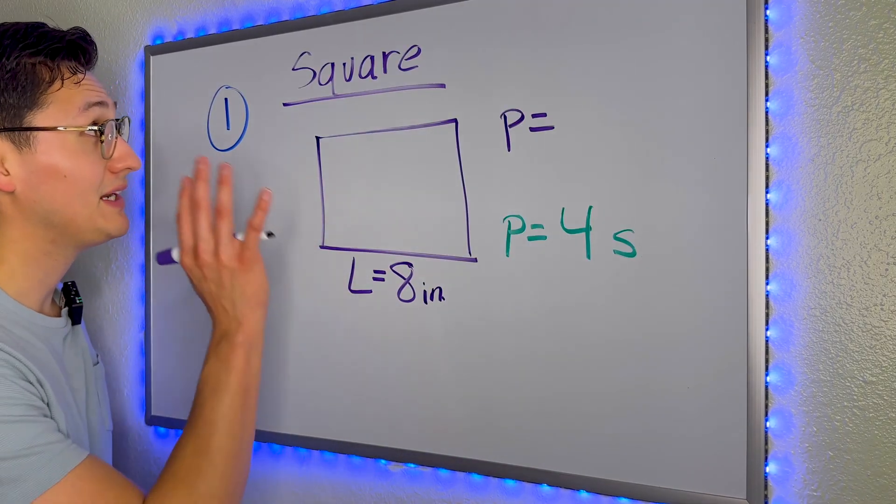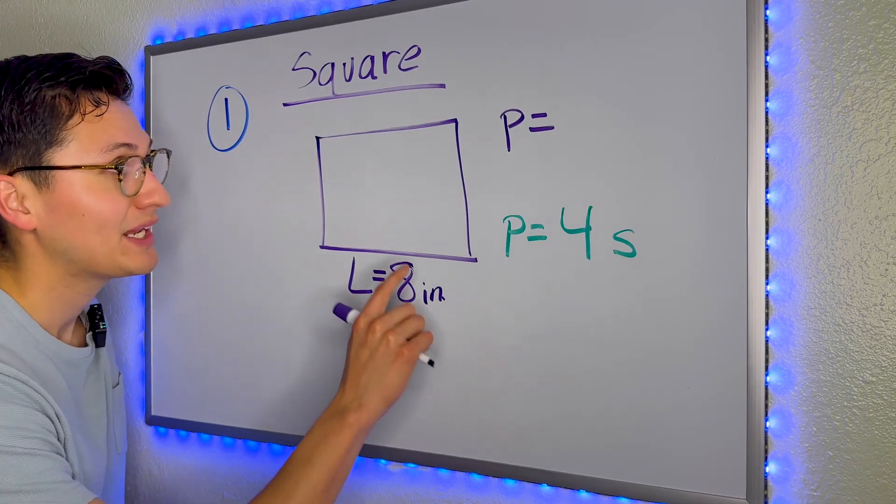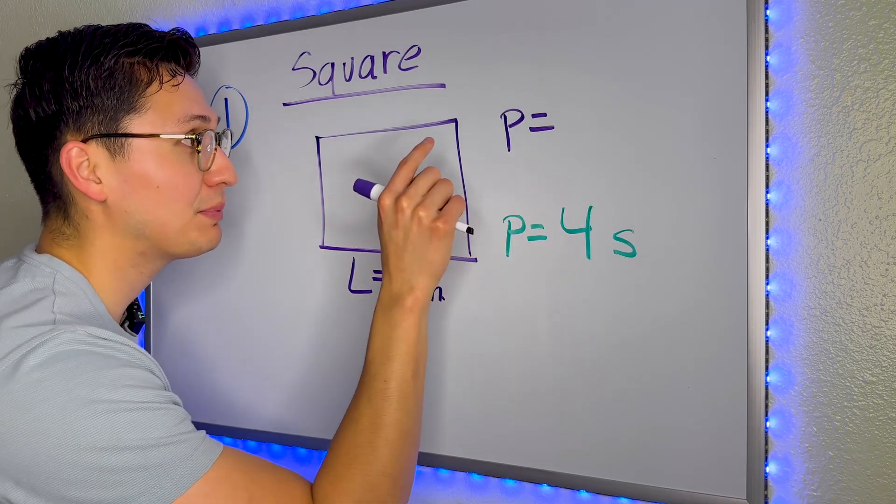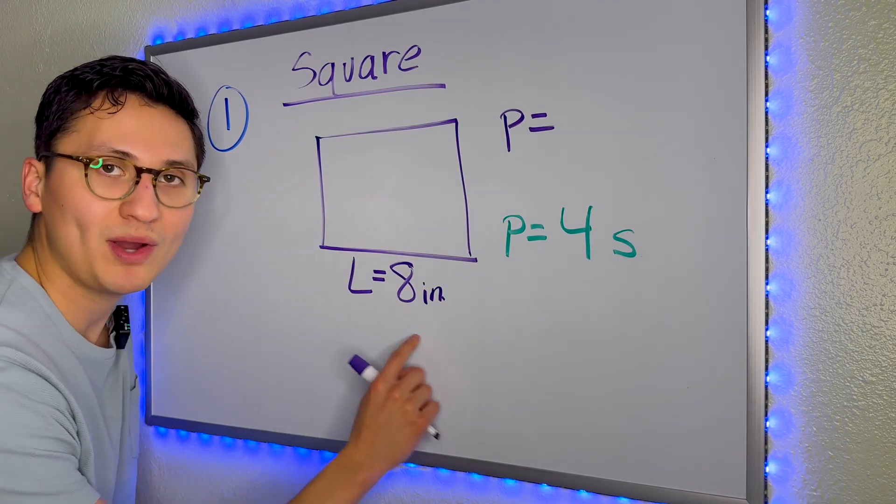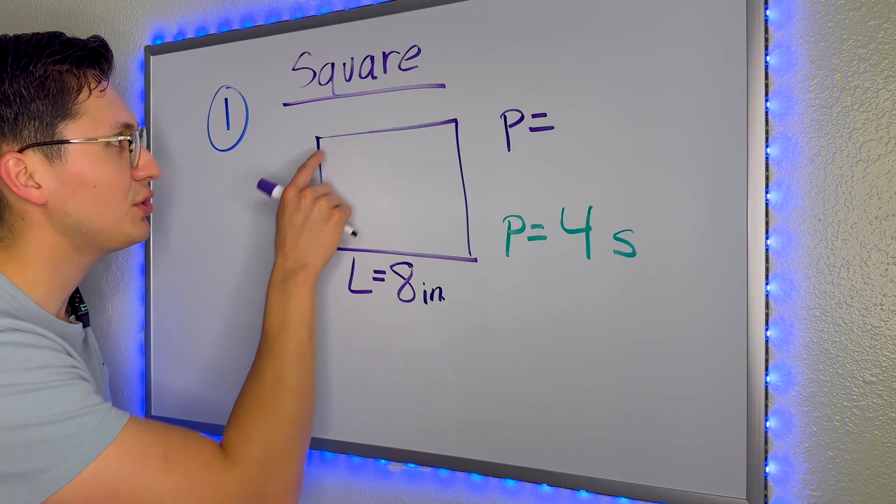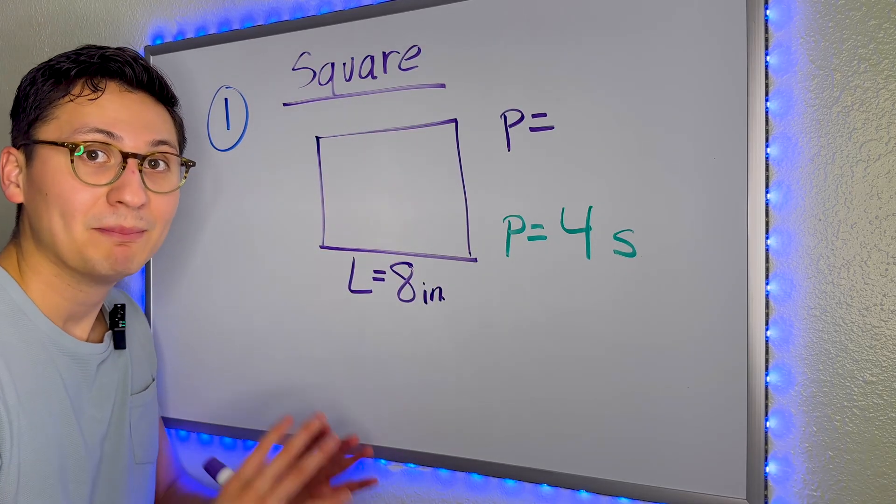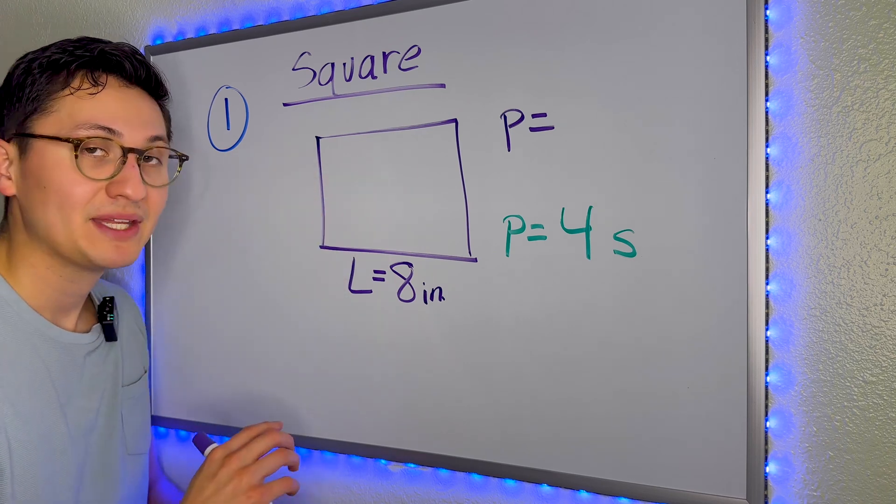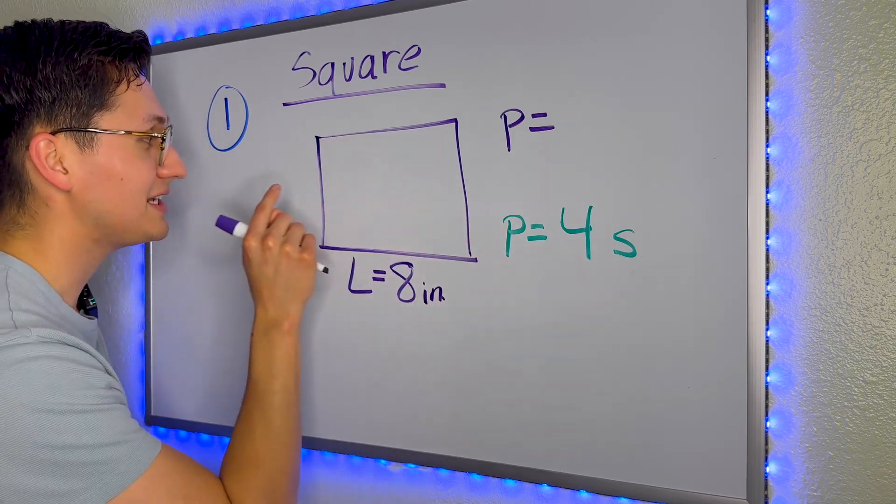For problem number one, they have given us a square. They have given us only one side and they're asking us to find the perimeter. Now, you may be asking yourself, well, they gave us one side. How am I supposed to know what the other sides are? And that's a great question. But here's the thing about squares. If it is a square, every single side is equal.